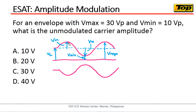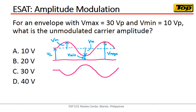The amplitude of the carrier changes depending on the amplitude of the modulating signal. That amount of change in amplitude actually represents the modulating voltage. So the high value and the low value — both are Vm. Of course, the lowest point of the carrier when its amplitude varies is what we call the minimum voltage, and the highest point is the maximum voltage. But we are asked: what is the unmodulated carrier amplitude?